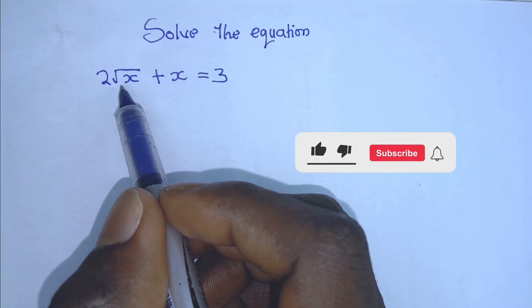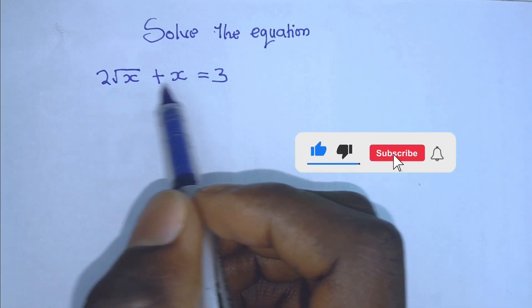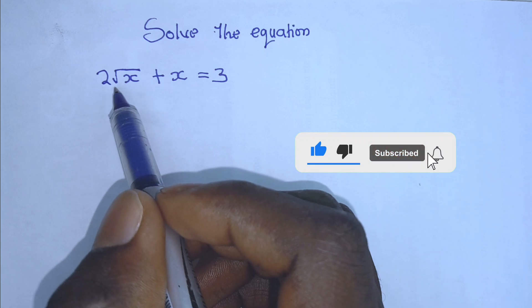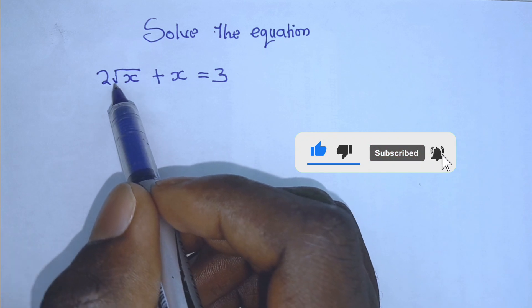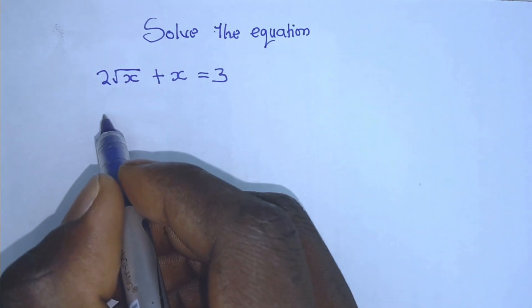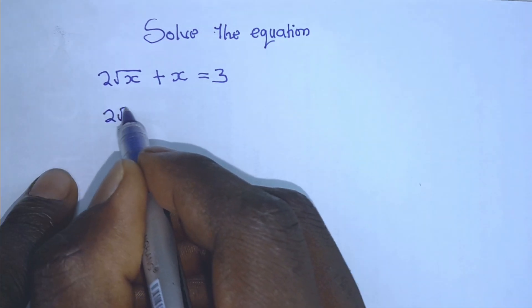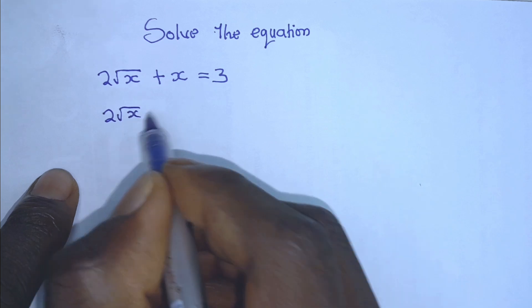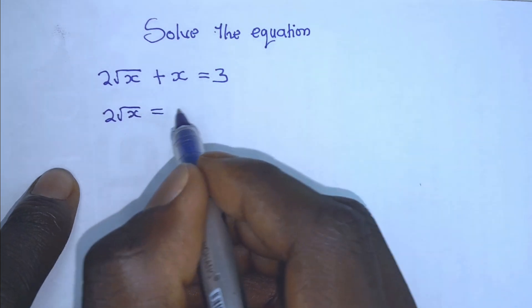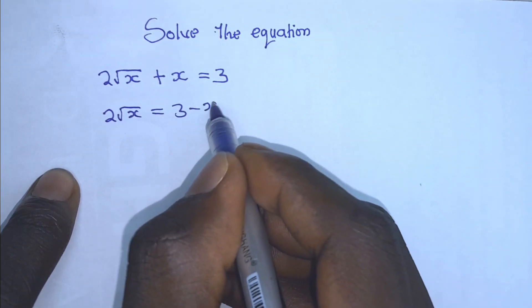We have 2 root x plus x is equal to 3. So the first step here is to isolate the radical term. Therefore, we have 2 square root of x is equal to 3 minus x.